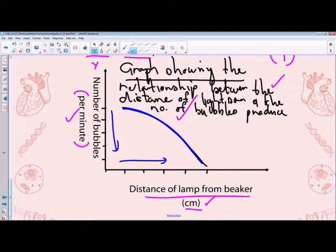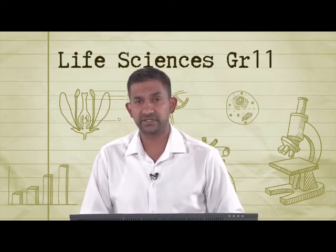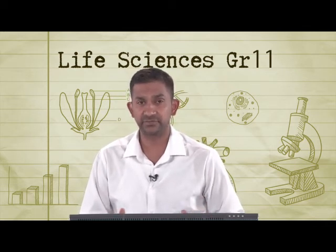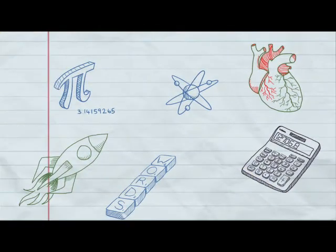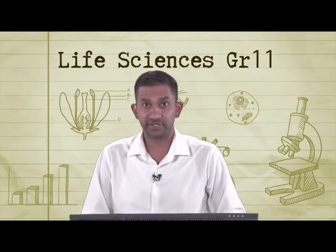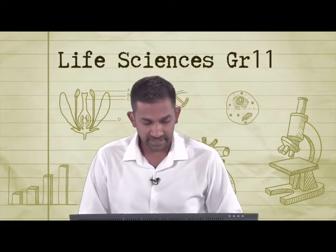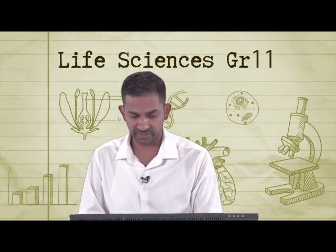We've done this experiment and seen how light intensity can influence the rate of a reaction. After a short break, we'll look at a few other investigations to see how other factors influence the rate of photosynthesis. The next activity investigates whether carbon dioxide is needed for photosynthesis — this is the third factor alongside light intensity and temperature.